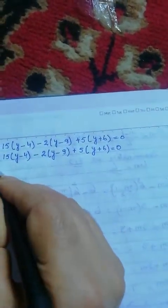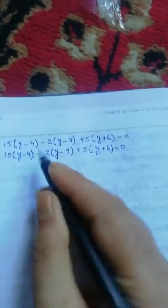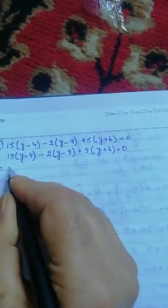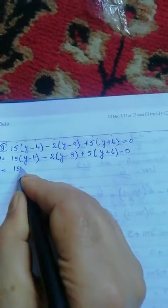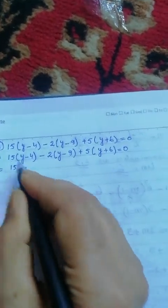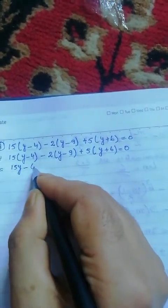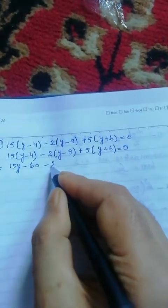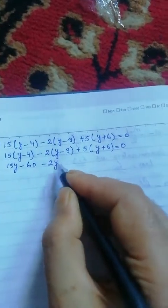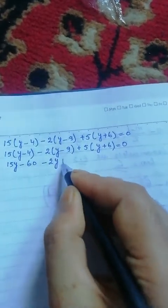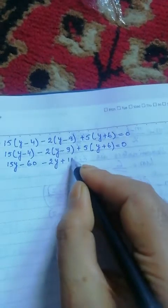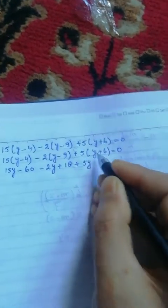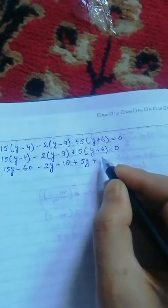Simplifying: 15 into y gives 15y minus 60, minus 2 into y gives minus 2y, minus times minus gives plus, so plus 18, plus 5 into y gives 5y plus 30 is equal to 0.